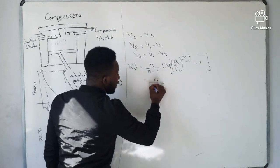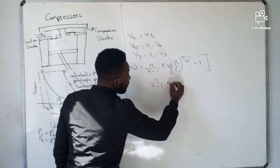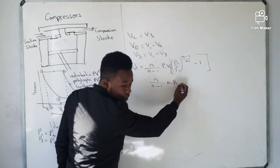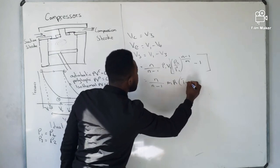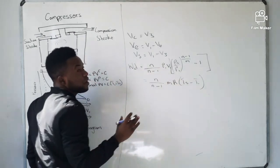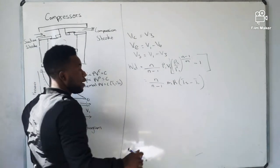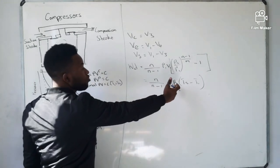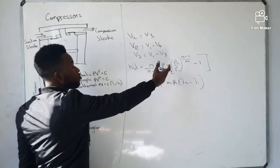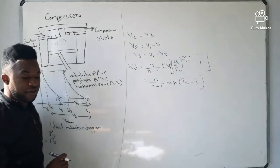The second formula for indicated power is: N over N-1, multiplied by M times R, multiplied by (T2 minus T1). It depends on what you are given - if they give you mass and temperatures, use the second formula. If you are given all the pressures and volumes, use the first formula.